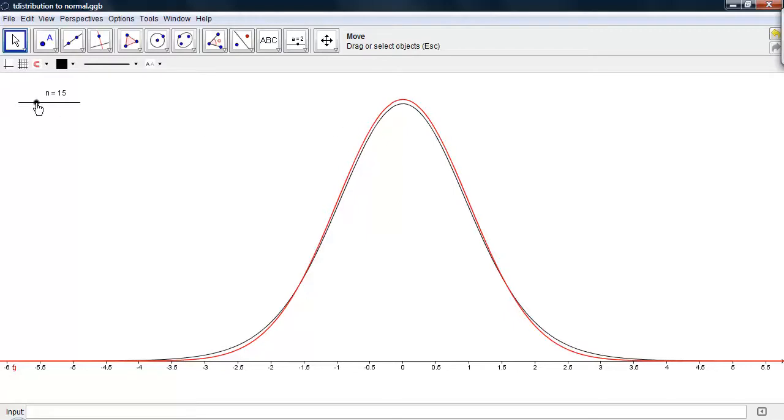Between 15 and 30, the shape of the t-distribution still doesn't quite hit the mark for the normal.